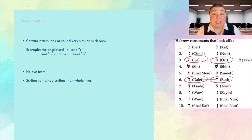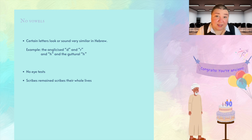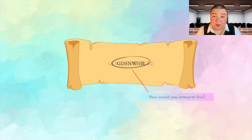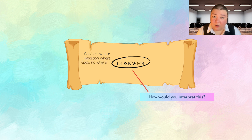So Genesis 36 ends up looking like a long stream of capital letters using only consonants. Additionally, there are certain letters which look or sound very similar in Hebrew, such as the anglicized D and R, and H and the guttural H. In those times, there were no eyesight tests, and scribes often remained scribes for their entire lives — likely some of their eyesight diminished as they entered into their later years. If you were a scribe reading 'GDSNWHR,' how would you interpret it? 'God's in nowhere,' 'God's now here,' 'God's in where,' or 'God's inner?' You can see the challenge.